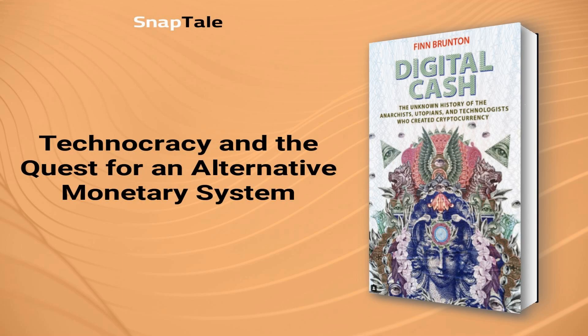During the Great Depression in the U.S., when banks failed and the circulation of U.S. dollars nearly halted, various municipalities issued their own currencies and stores turned to bartering commodities like eggs and honey. Howard Scott, a New York impresario, offered an alternative monetary system called Technocracy Incorporated. The system, which referred to itself as the Technate, promised to rule the U.S. and Canada.